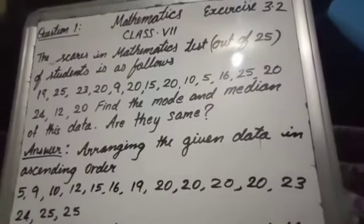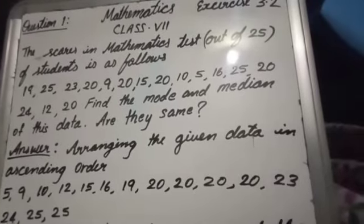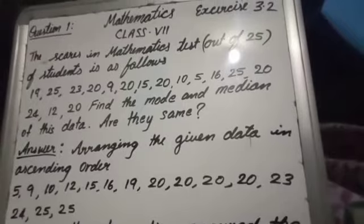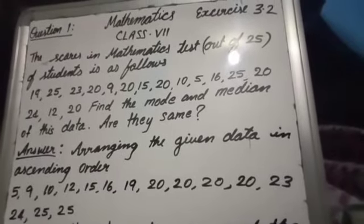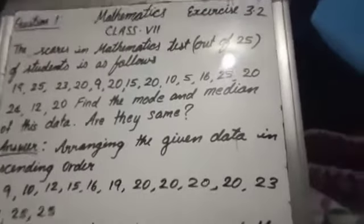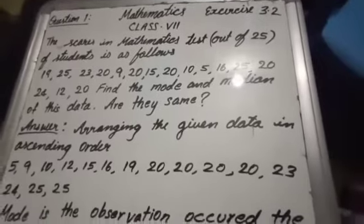So we have 5, 9, 10, 12, 15, 16, 19, 20, 20, 23, 24, 25. Dear students, these many data I have arranged in ascending order.